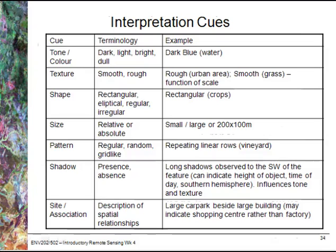For texture, we look at whether things are smooth or rough — this is really a function of colour variation at different scales that gives the impression of being smooth or rough. The key thing is to realise that not every feature you are trying to describe will have every single interpretation cue associated with it. For example, tall buildings might have shadow, whereas a water body might not — but the absence of shadow is also important to note.